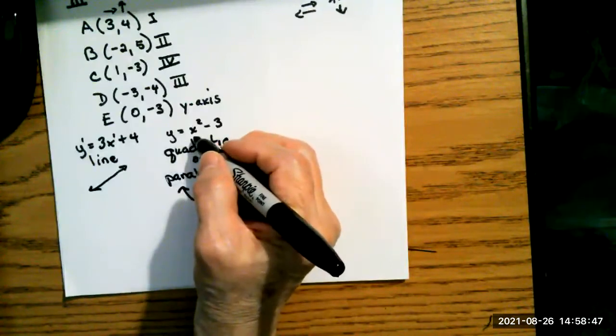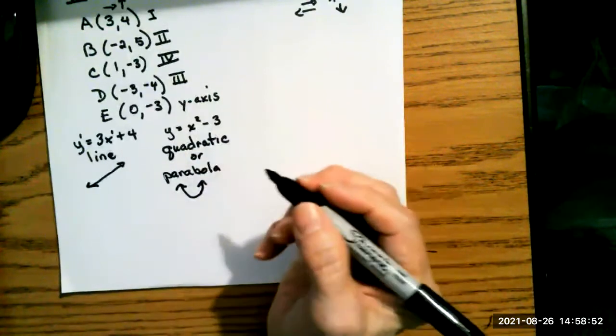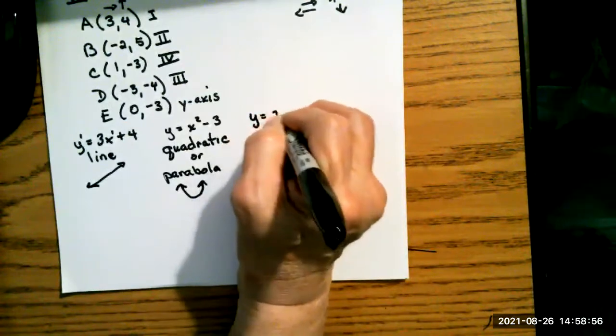It's x squared minus 3, and again, you can put this on your calculator. y equals, and then x, and there's a little squared key for you to use, and then minus 3, and then graph, and you'll be able to see your graph of this equation.